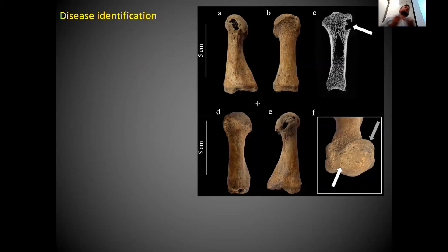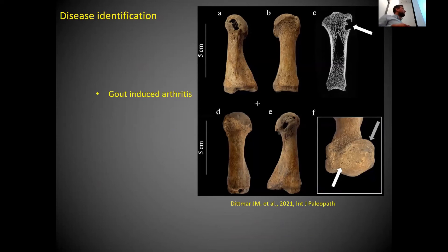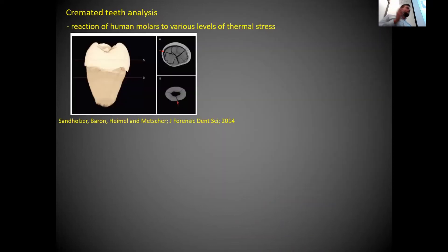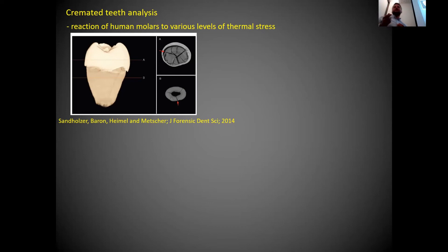Micro-CT can also be used for disease identification in bones. Typically this involves arthritis — one paper identified gout-induced arthritis in metatarsal bones. The higher resolution of micro-CT makes it well suited for this kind of analysis.